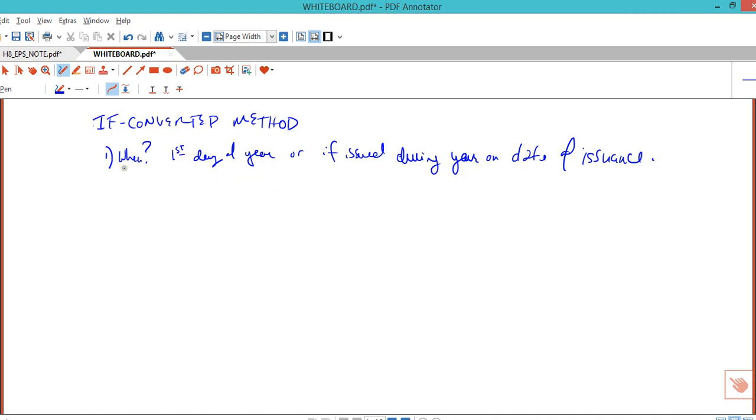In the example we have one that was outstanding at the beginning of the year, one that was issued on August 1st, so we'll have to adjust for that. They make an assumption about the conversion date. Then what we have to do is calculate interest net of tax that would have been avoided.